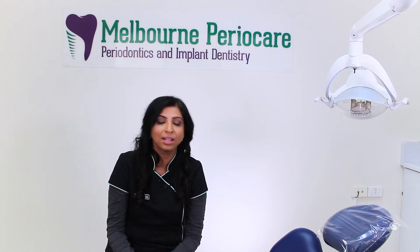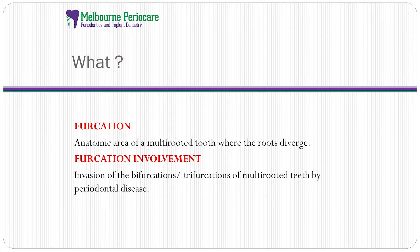So what exactly is furcation involvement? Before we find out what furcation involvement is, we need to know what a furcation itself is. It's the anatomic area of a multi-rooted tooth where the roots diverge, and furcation involvement is the invasion of that bifurcation and trifurcation area of multi-rooted teeth, usually by periodontal disease.